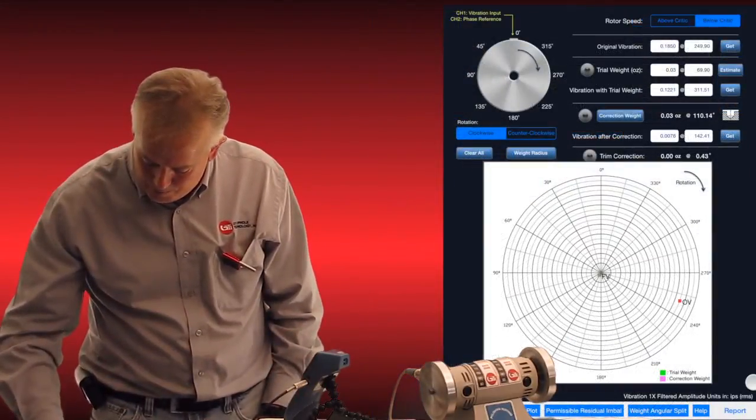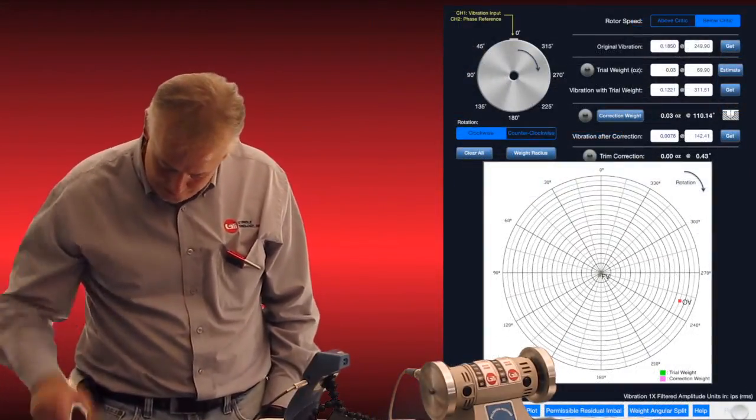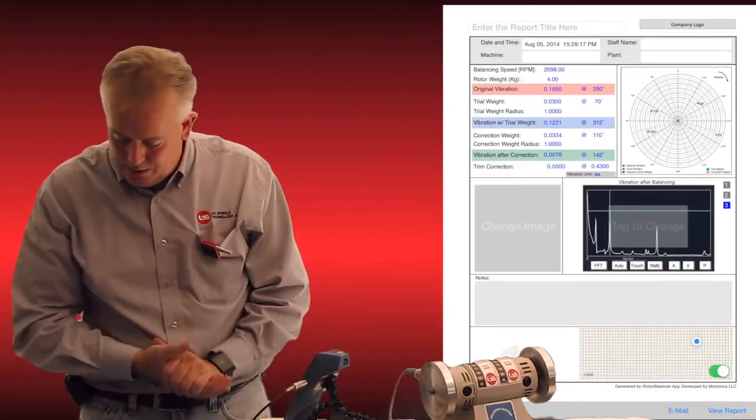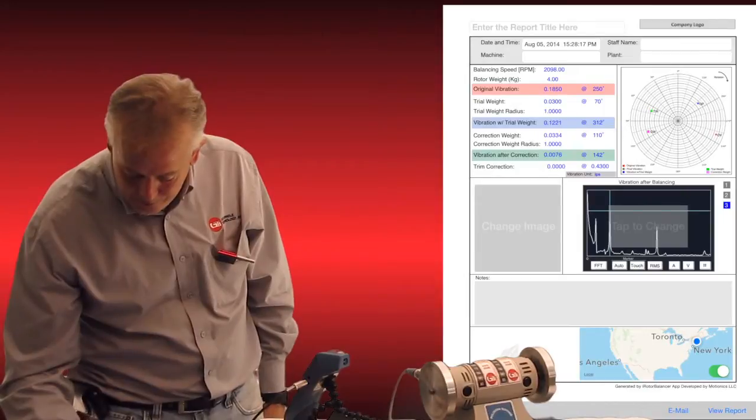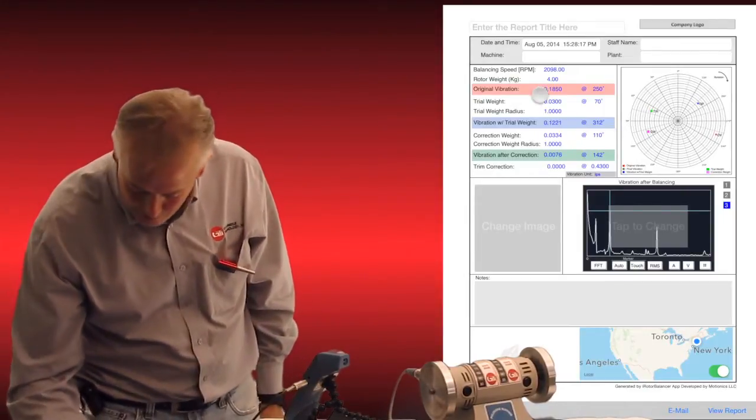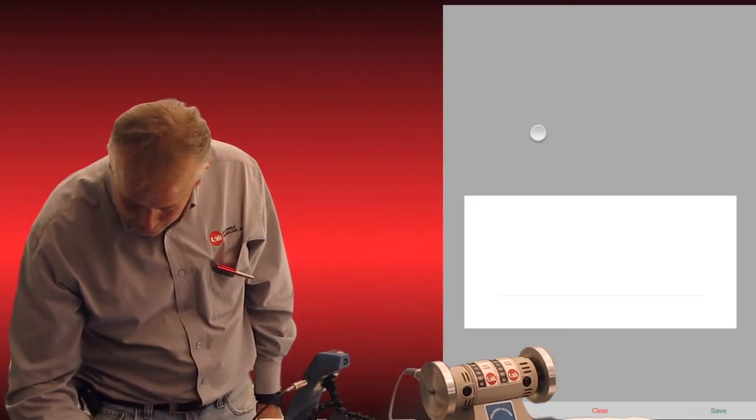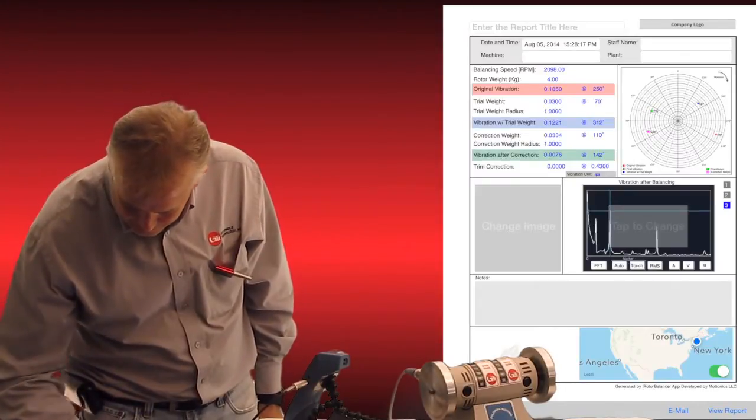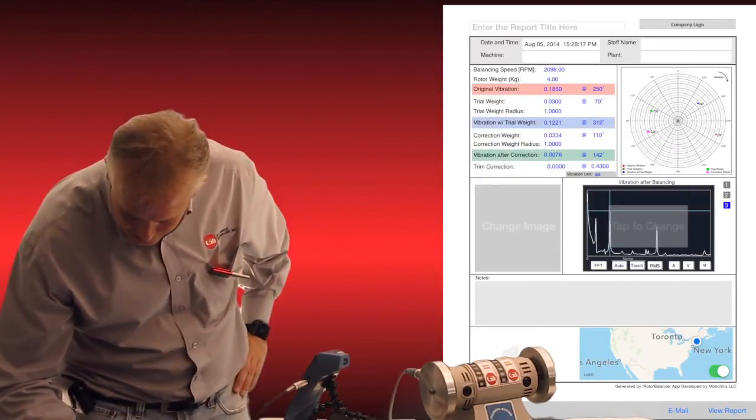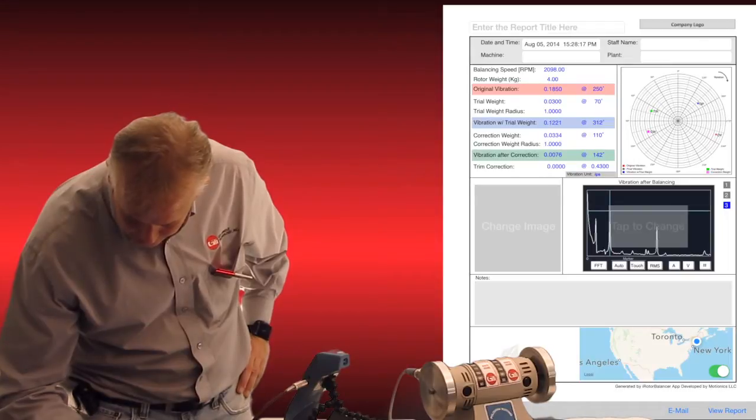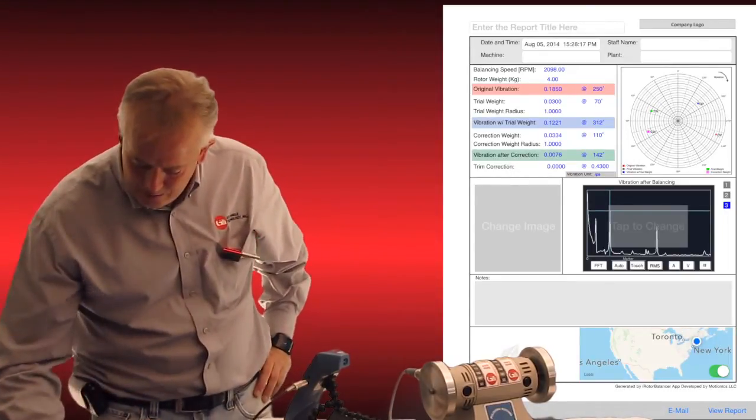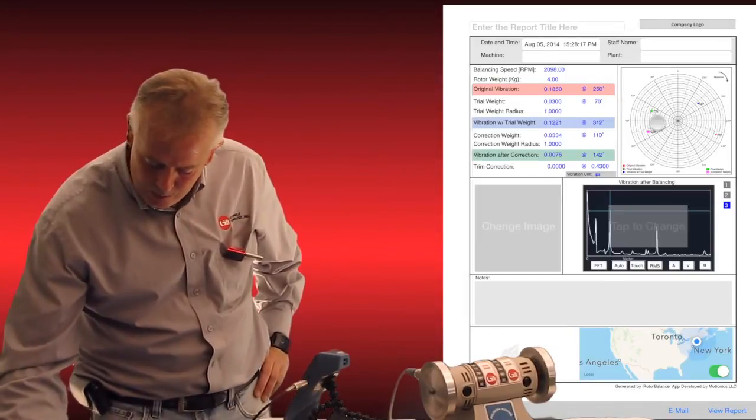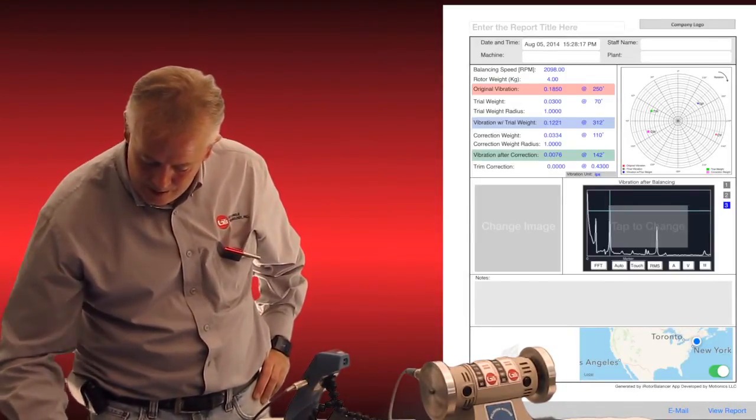So let's just go to our report button, which is down here on the right. And you can see my report comes out here. I've got my original vibration at 0.18 in red here. I've got my vibration with trial weight. I also have my vibration correction in the green here, and then my trim correction there. I also have my nice polar plot of exactly what was done here on to the right.